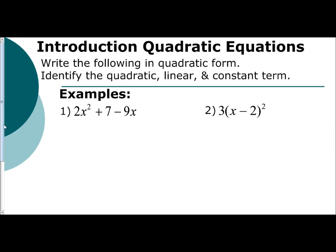So first we have 2x² + 7 - 9x. Remember quadratic form fits the quadratic term first, your ax², then your linear term, and then your constant.